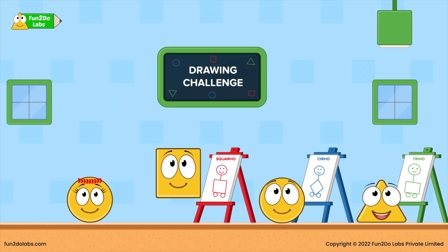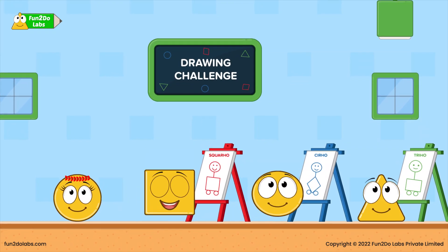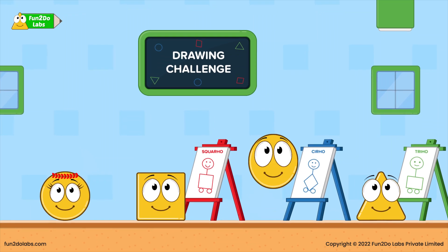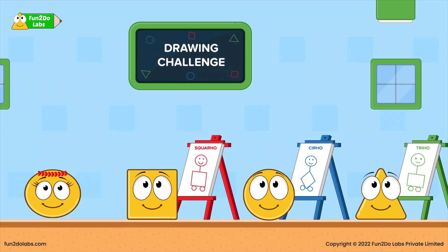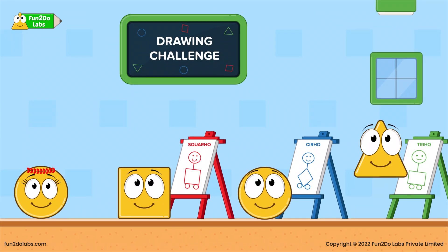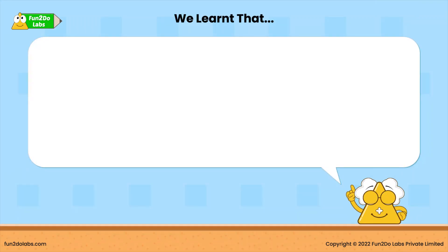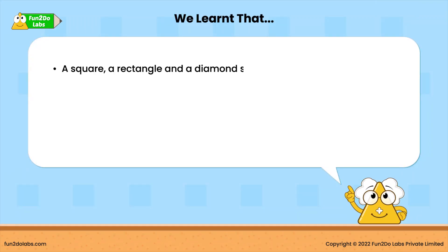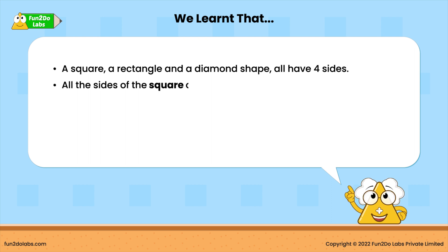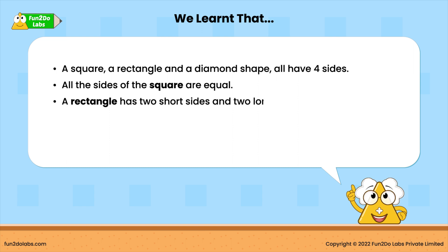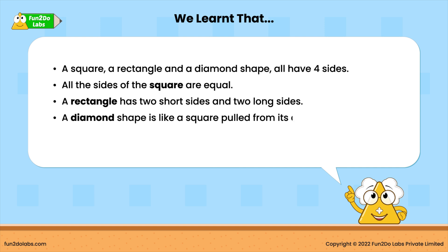Challenges are fun, but confusions are even more fun. They not only help us gain clarity, but also help in learning deeply. We learned that a square, a rectangle, and a diamond shape all have four sides. All the sides of the square are equal. A rectangle has two short sides and two long sides. A diamond shape is like a square pulled from its corners — it looks like a kite.